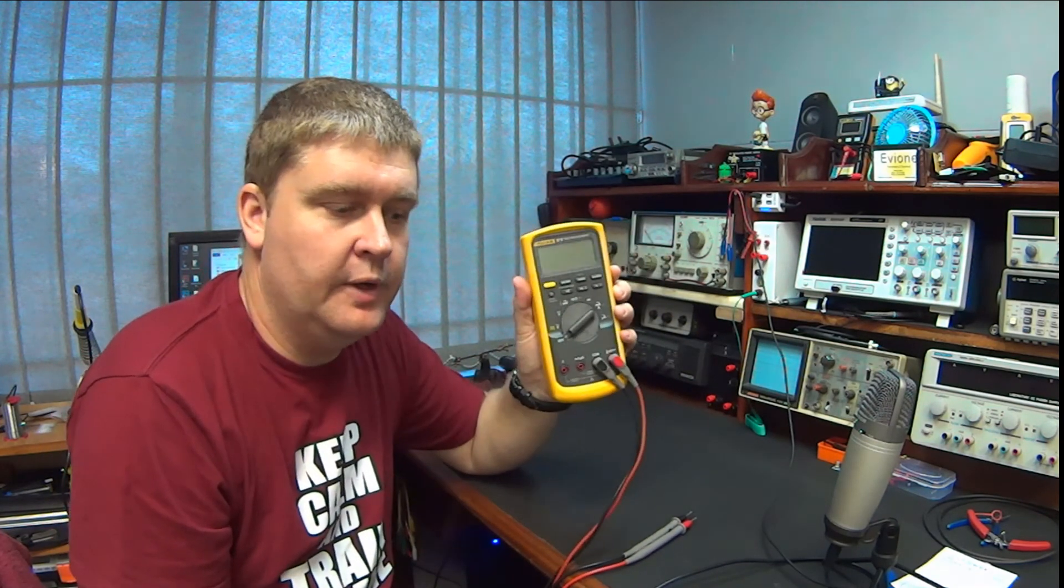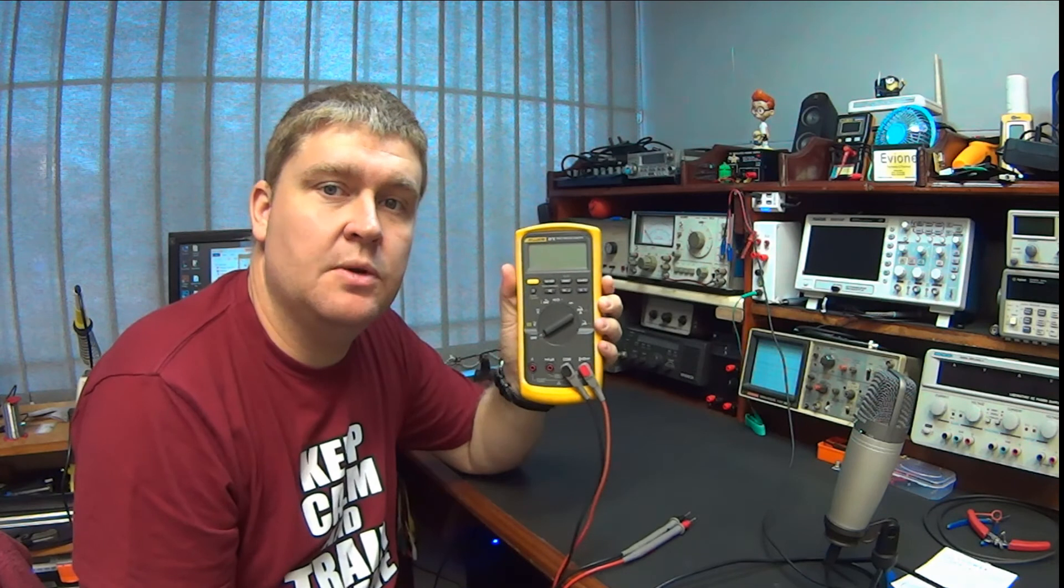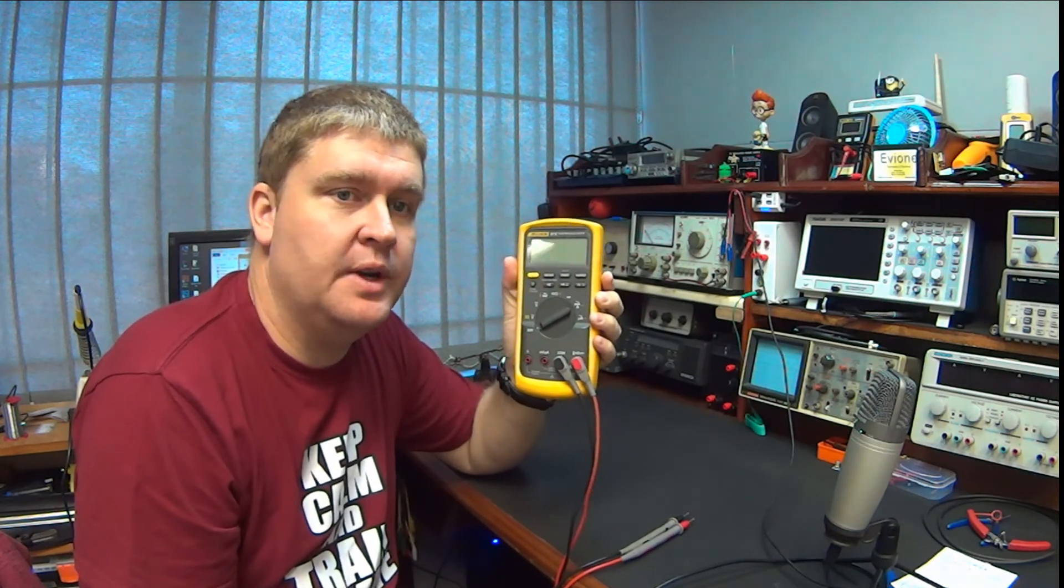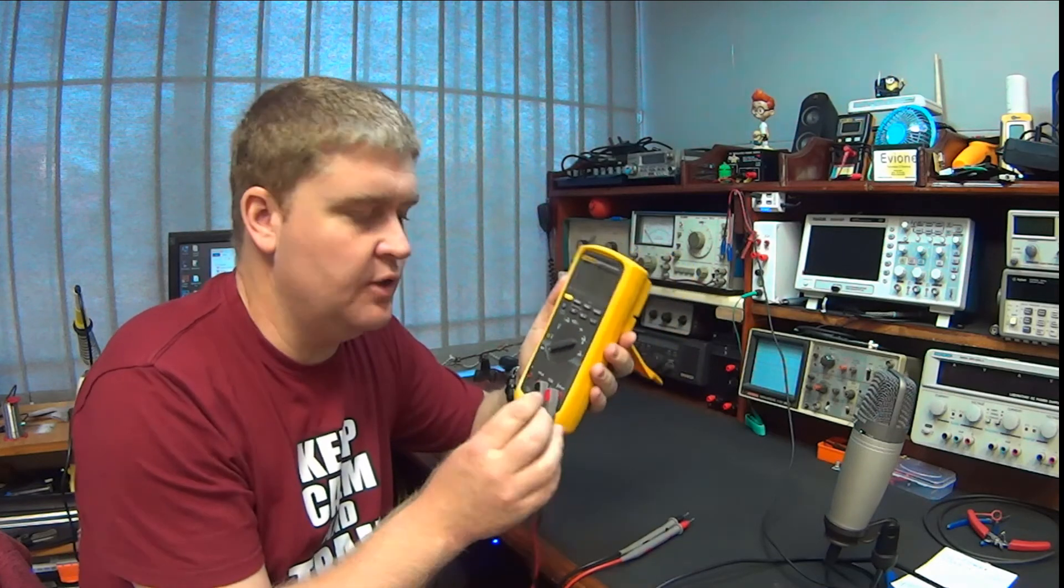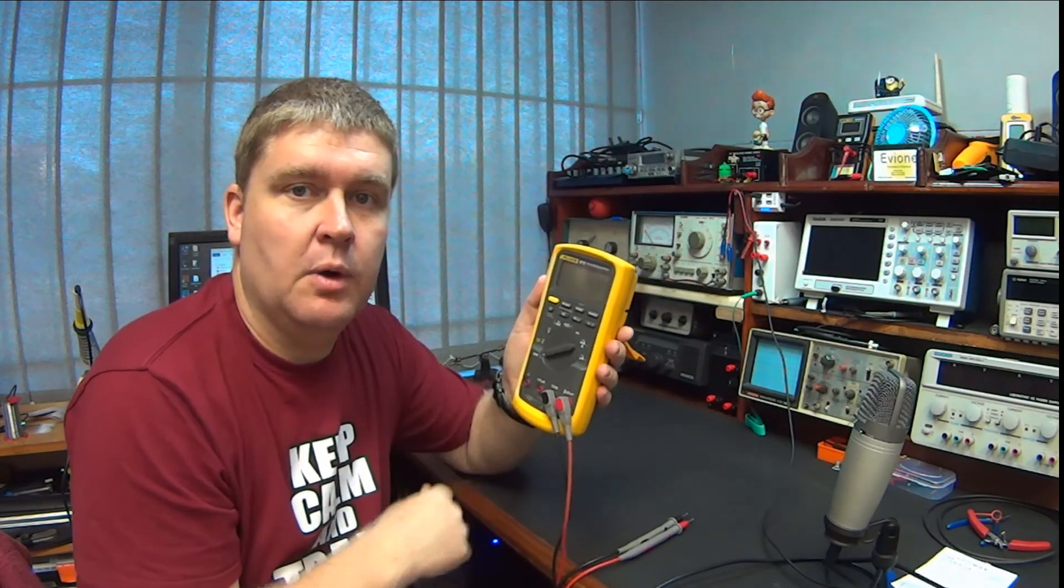Okay, so just putting it all into perspective, the Fluke 87-5, definitely a meter worth having, if you can find one in good condition, second-hand, or alternatively, I do believe they have released a new version of this meter, which works very well.